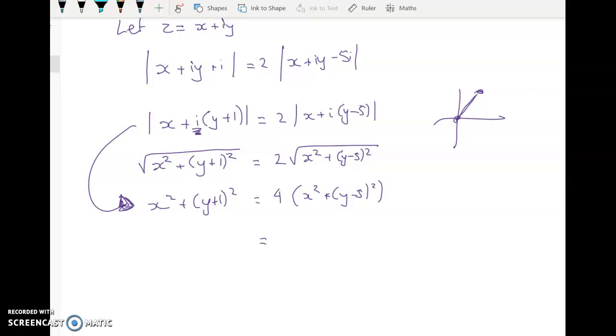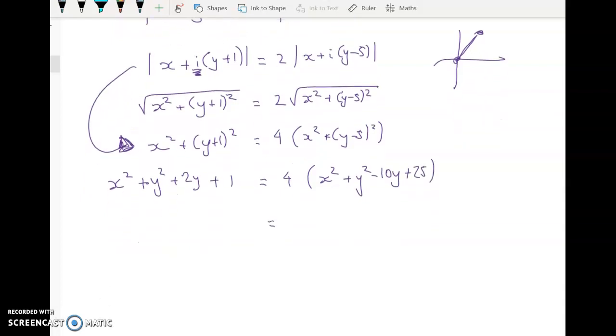What I think you do need to do though is be pretty careful with expanding everything out so that you don't drop things or muck up your coefficients. So on the left hand side we get x squared plus y squared plus 2y plus 1. And over here I'm going to go slowly. So we get x squared plus y squared minus 10y plus 25, which gives us 4x squared plus 4y squared minus 40y plus 25.